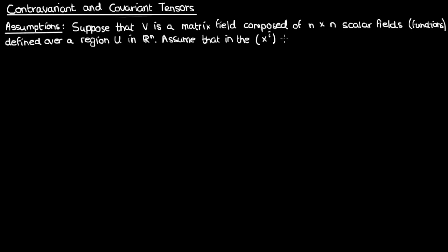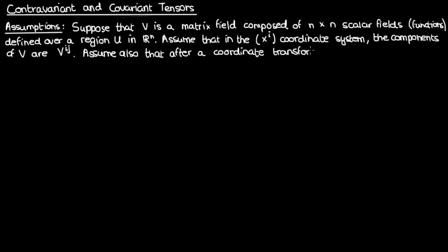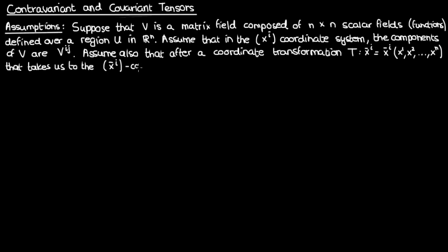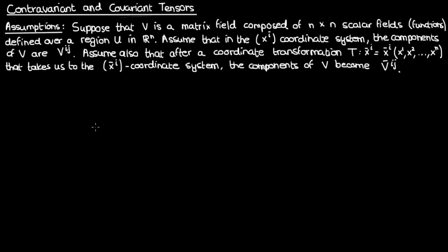Let's suppose that the components of V in the x^i coordinate system are given by V^ij, and when we apply a transformation to take us from the x^i coordinate system to the x^i-bar coordinate system, the components of V become V^ij-bar. Now V is a matrix field, but a matrix is not a tensor. In order for V to be a tensor, it is not enough for V to simply be a matrix — V must also follow certain transformation rules.